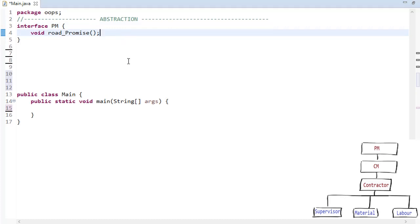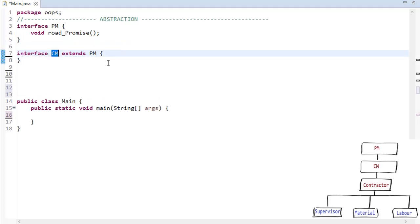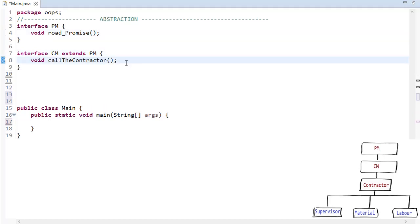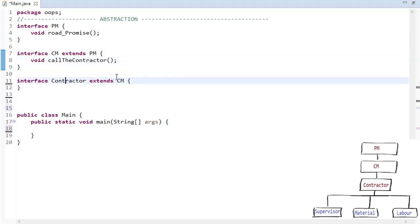Now, this road promise is, by default, an order from the PM. So there is an interface CM that will extend the PM interface. This road promise will, by default, as I told you, have the properties acquired by the child. Further, we have the contractor who will call contractors. Now the contractor class implements CM and PM, so the contractor has two orders: the road promise and call the contractors.